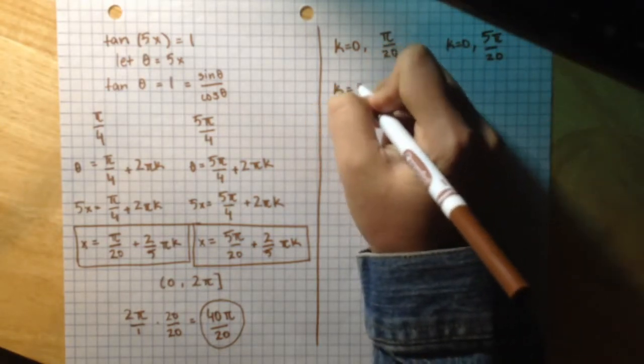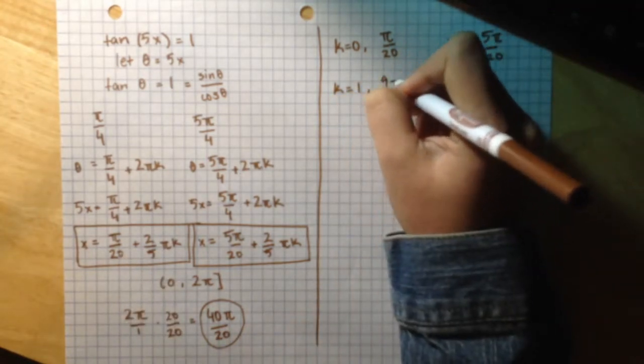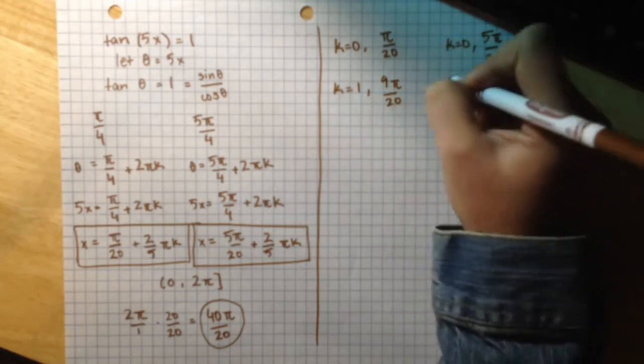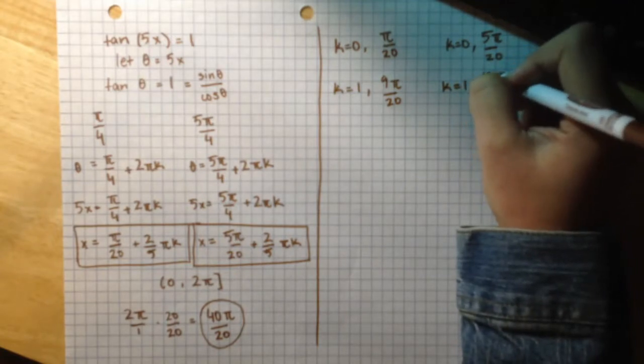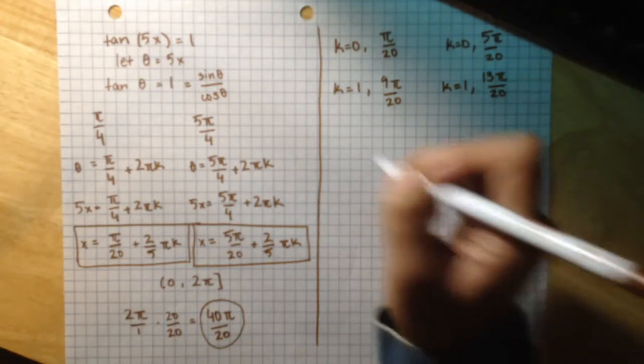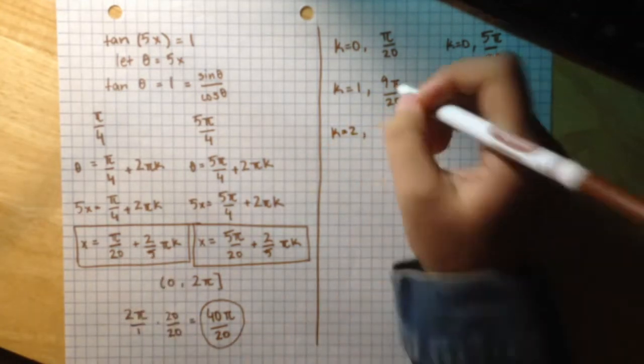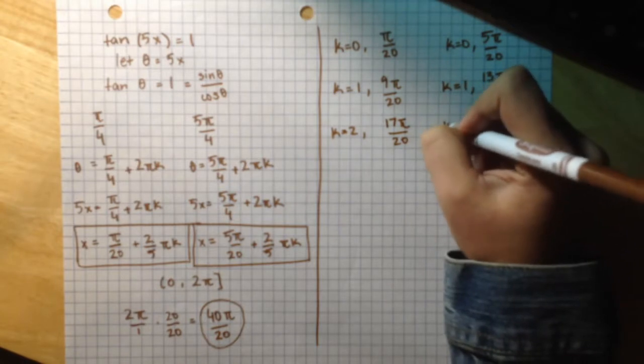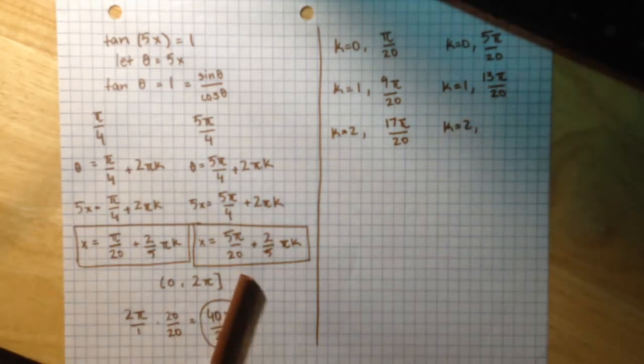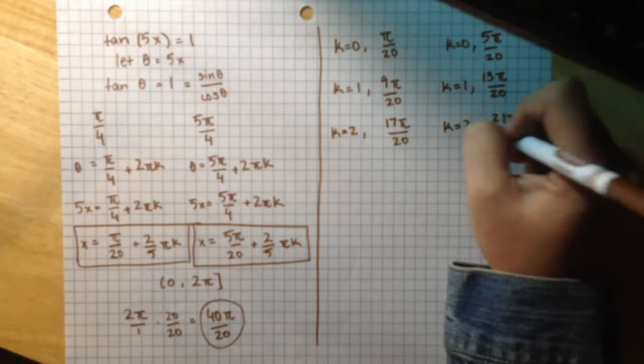If I substitute k as 1 into this equation, I get 9pi over 20. And if I substitute k as 1 into this equation, I get 13pi over 20. If k equals 2 in this equation, 17pi over 20. And if k equals 2 in this equation, then 21pi over 20.